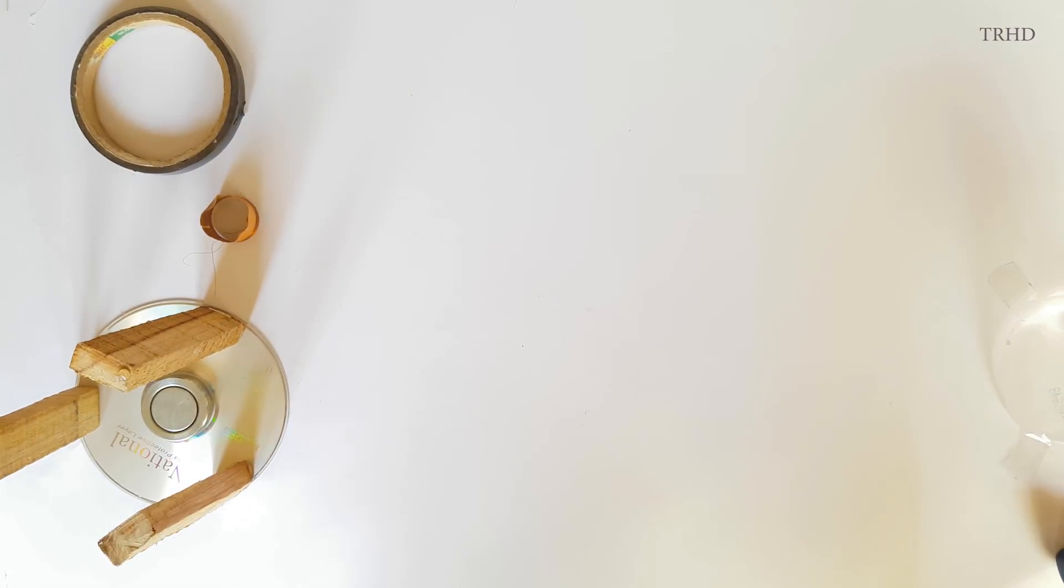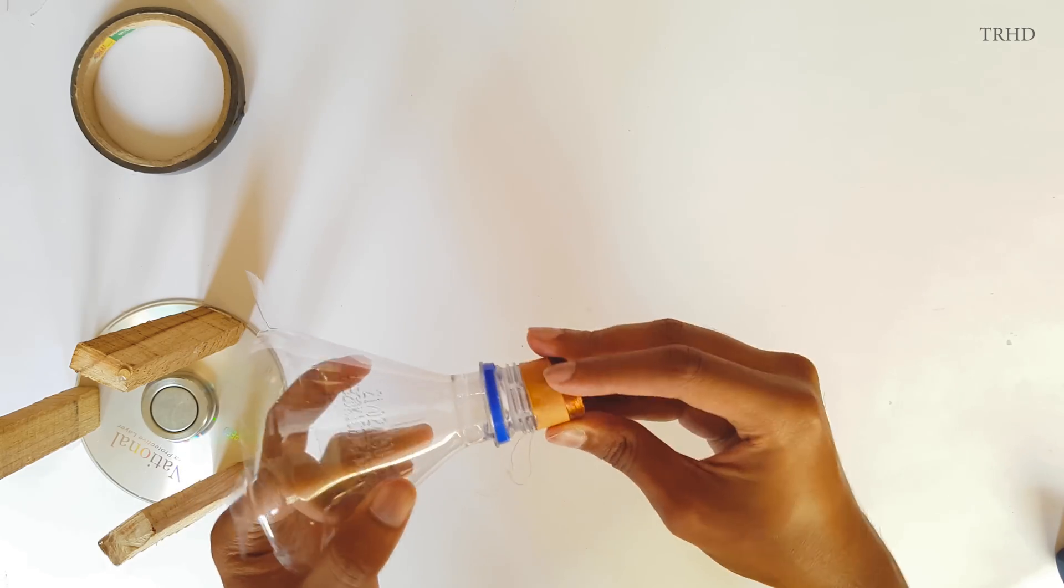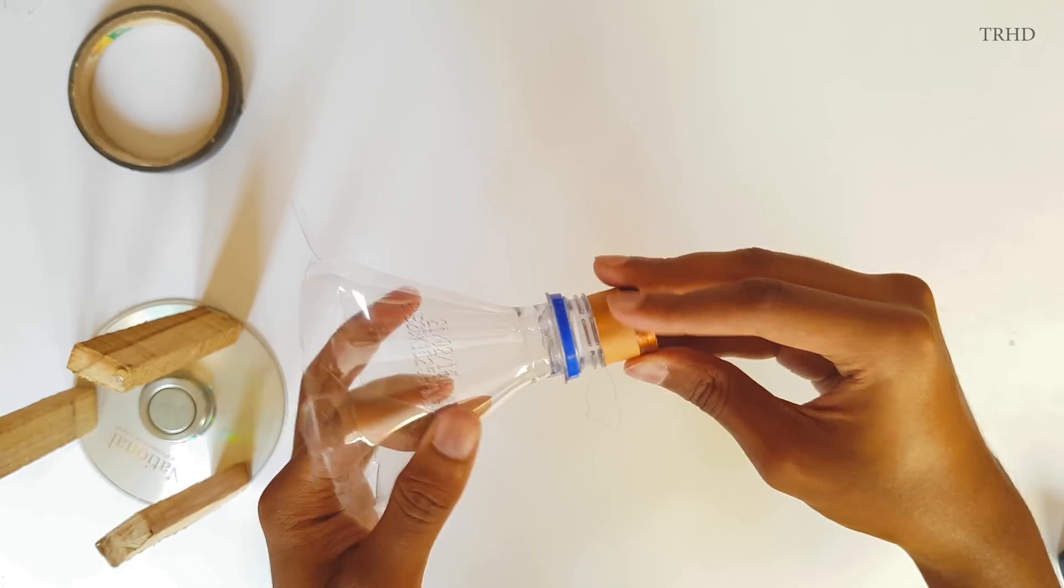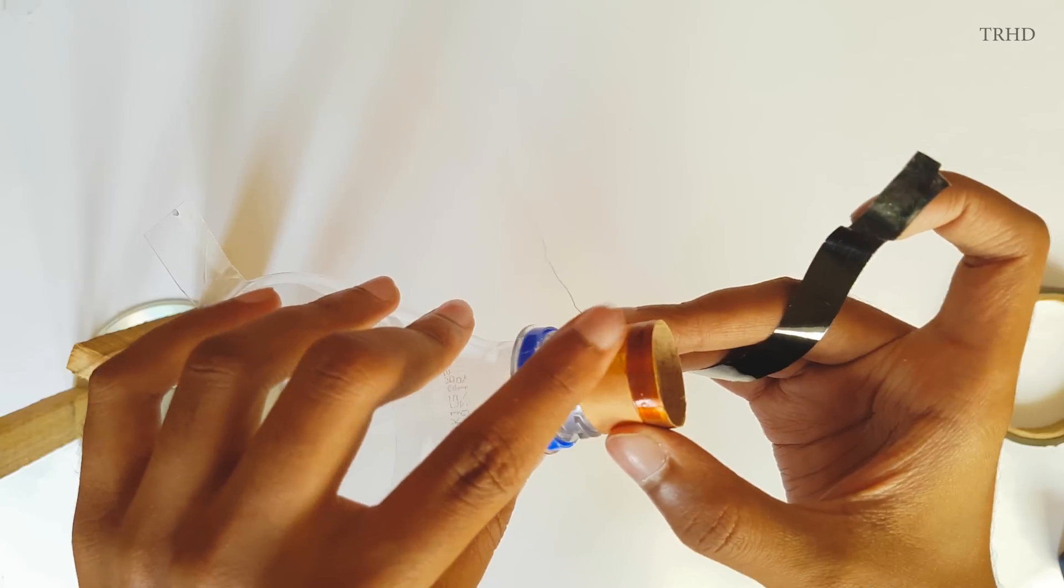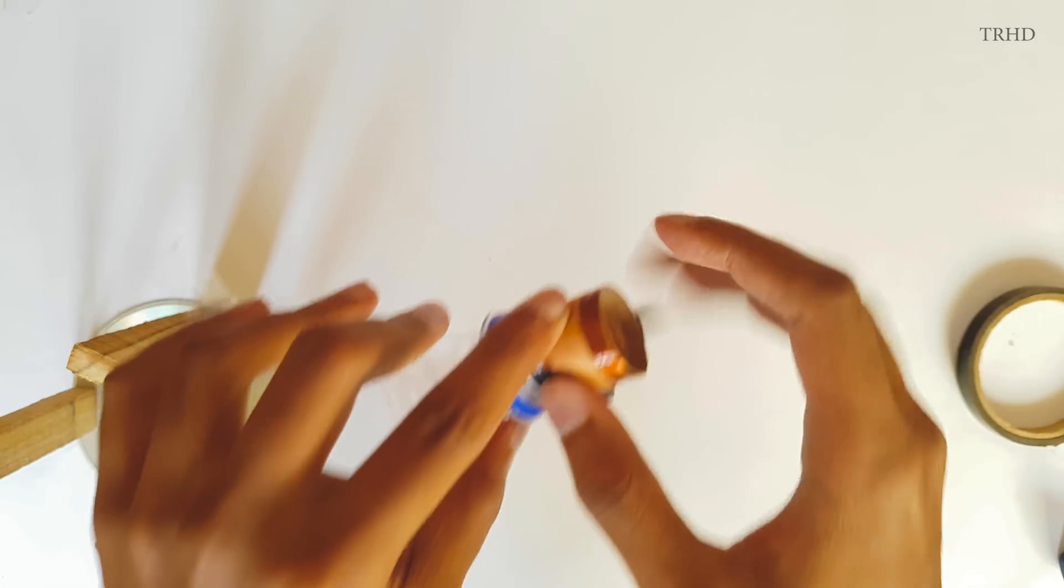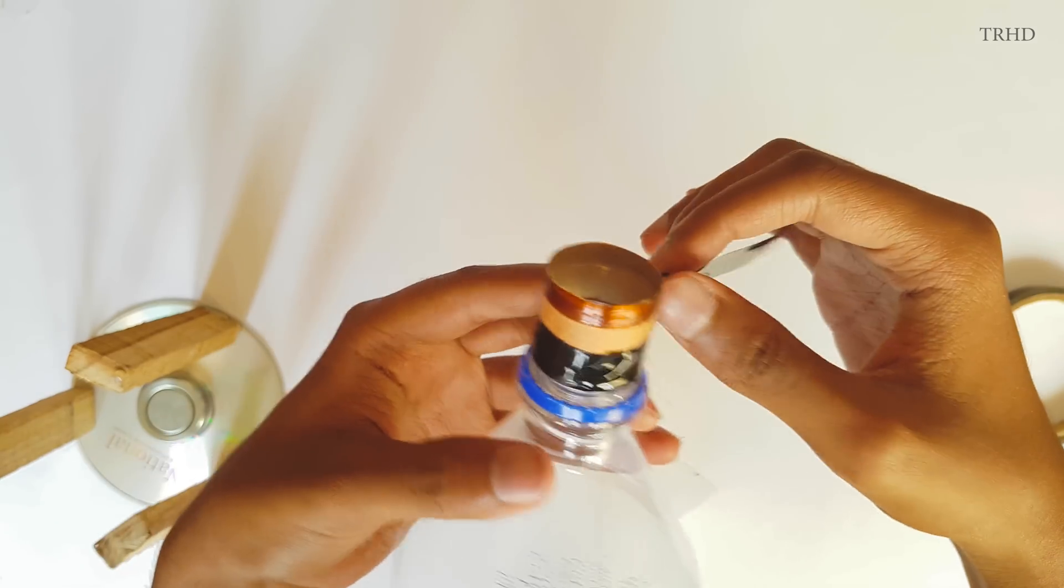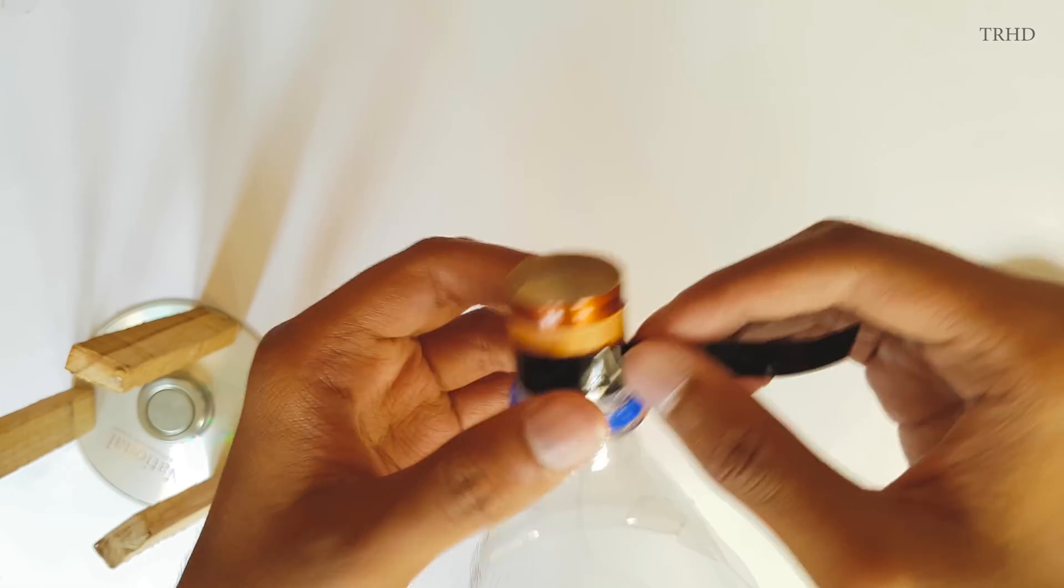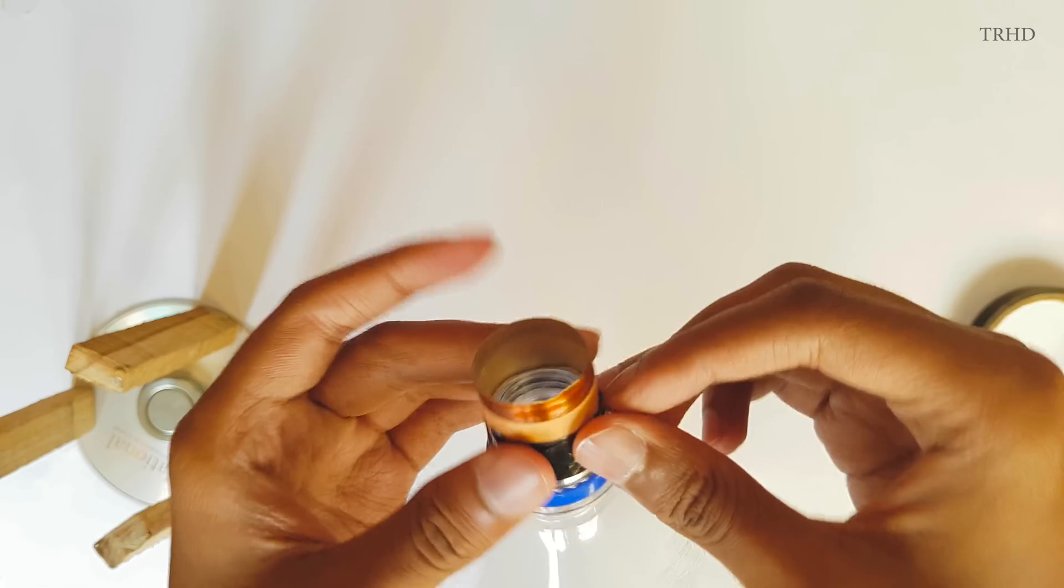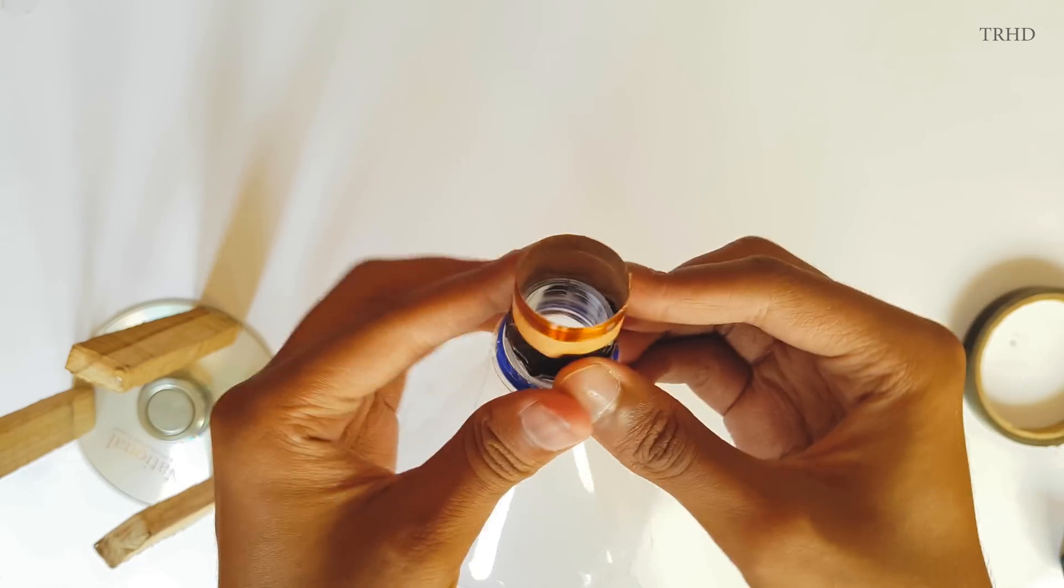Now we need to fix this voice coil onto this plastic bottle. You need to fix it at the neck of the bottle. Use a tape and stick the voice coil to the neck of this bottle. Just like this. It is very easy to do. Just watch carefully. And that's it, we fixed the coil to the neck of the bottle.